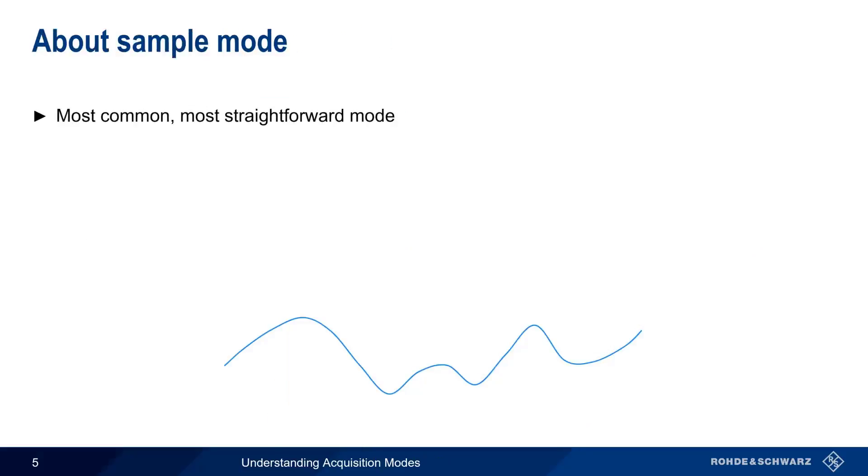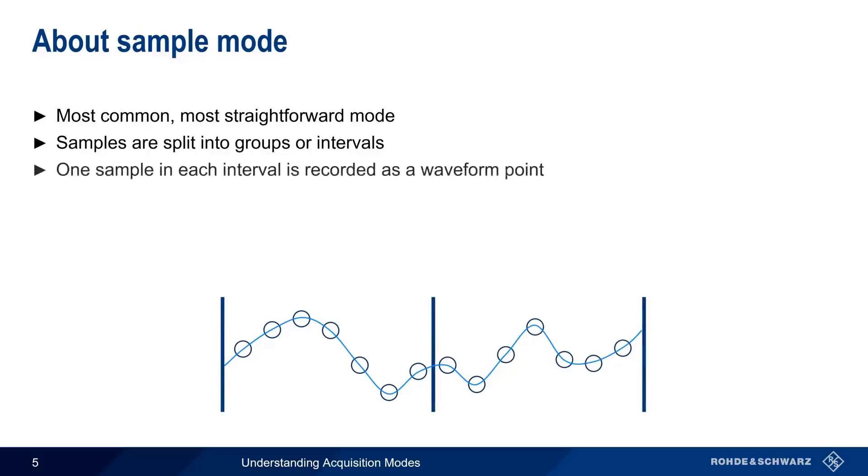Sample mode is the most common and most straightforward acquisition mode, and it's often the default mode on many oscilloscopes. In this mode, the samples are divided into groups or intervals. One sample, in this example the last one, from each group is recorded or taken as the waveform point, and all of the other samples in each interval are simply discarded.